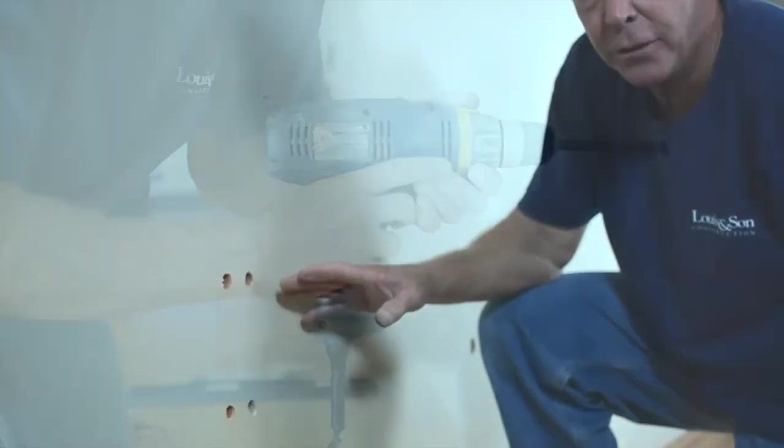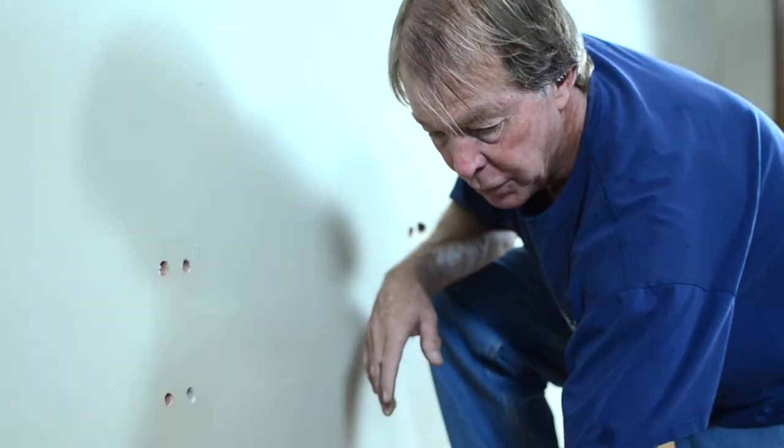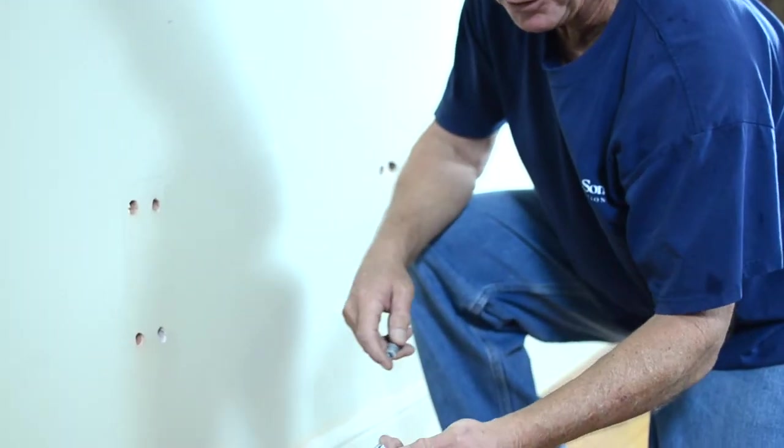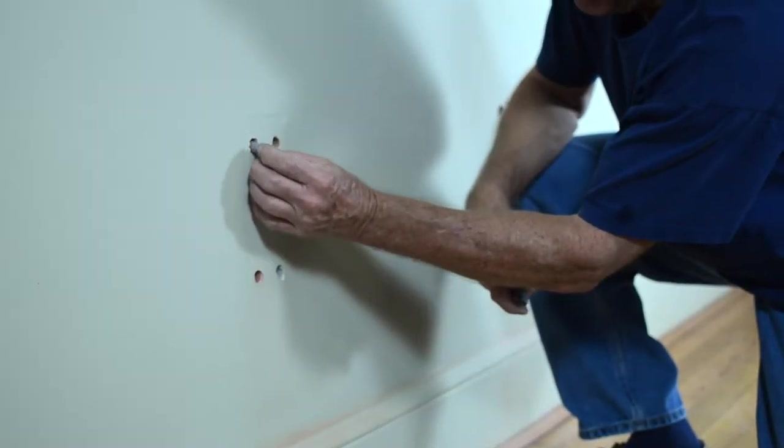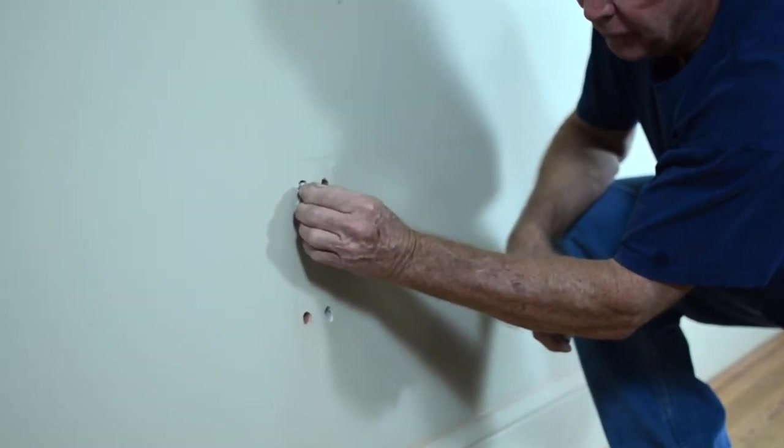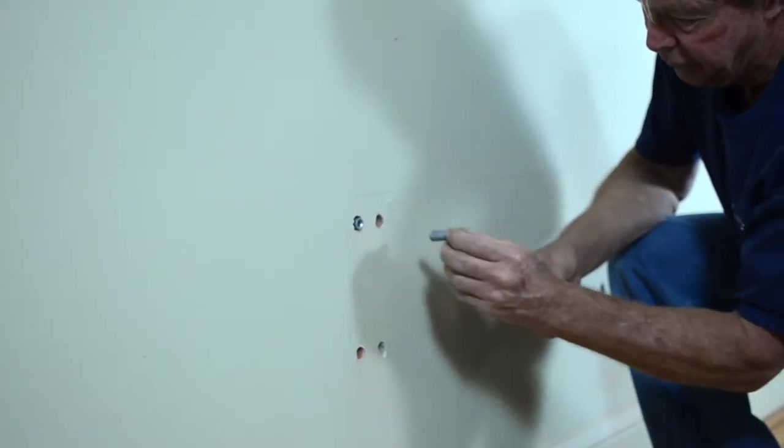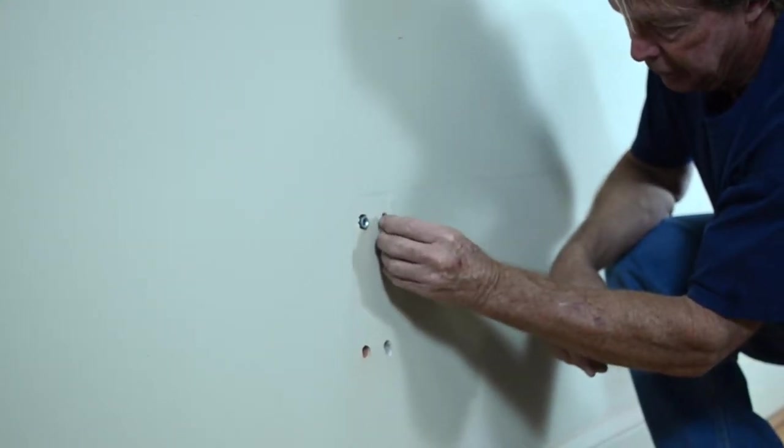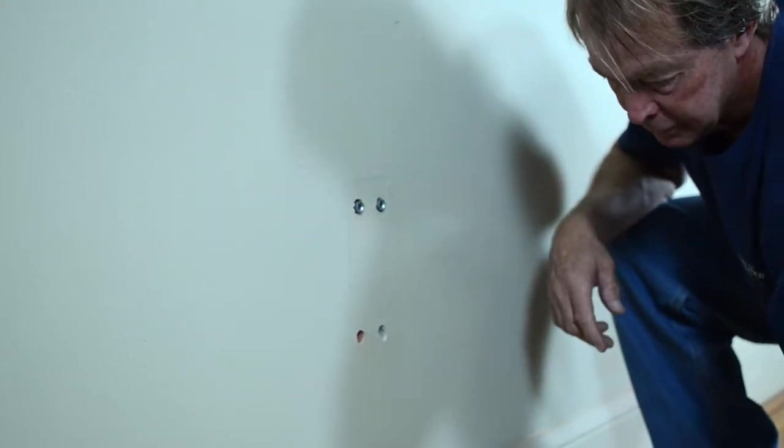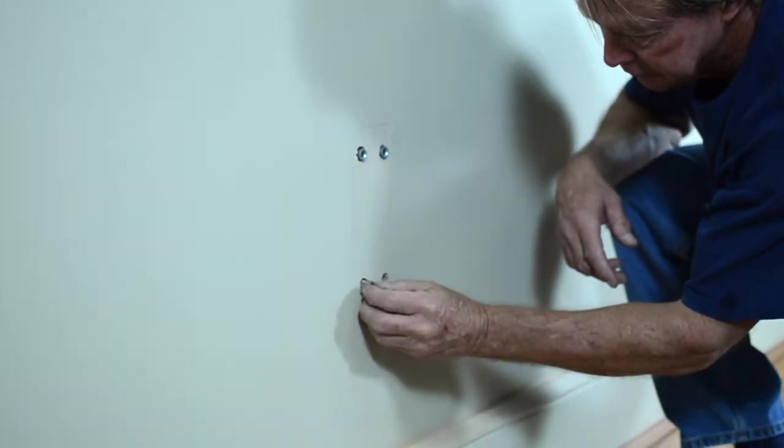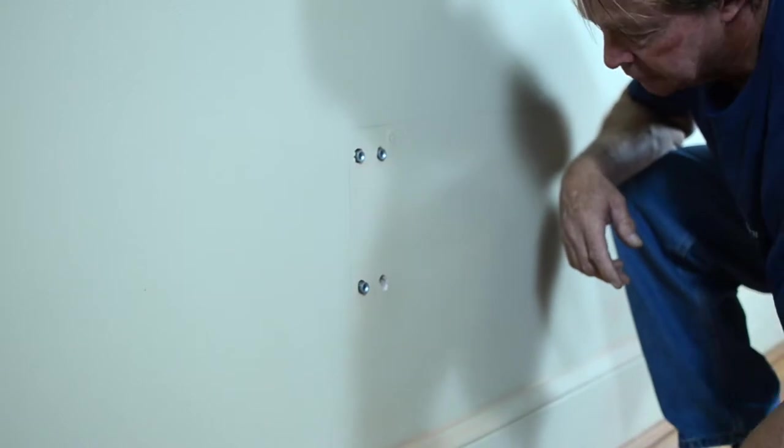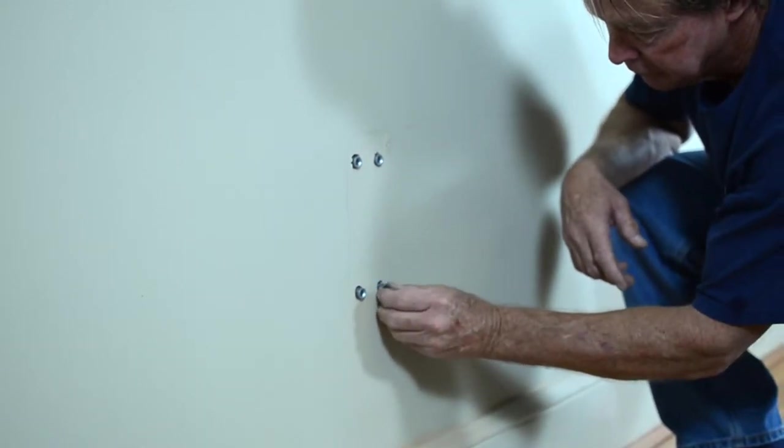So now we're ready to install the shields, which I told you can be bought at Lowe's or Home Depot. These are quarter inch shields, inch and a half long. You put them in the hole, see they're kind of loose fitting in the hole. Put them in the hole, leaving the end sticking out just a little bit.